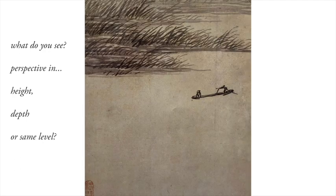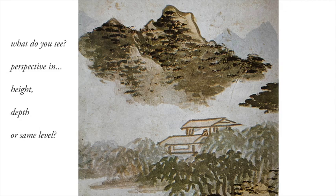Here is another. Take a moment and look at the composition. Are you establishing height, depth, or the same level? And one more. You can see that some compositions are much more complicated than others, some more simple. Some involve just one concept — whether it's depth, height, or same level. Some are combining multiple concepts. What do you see in this image?